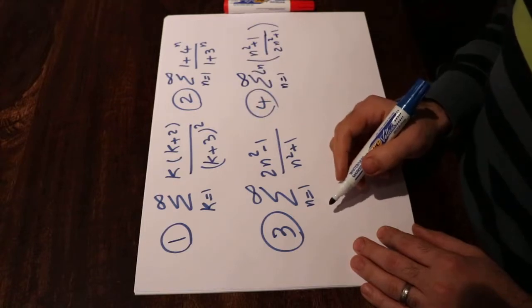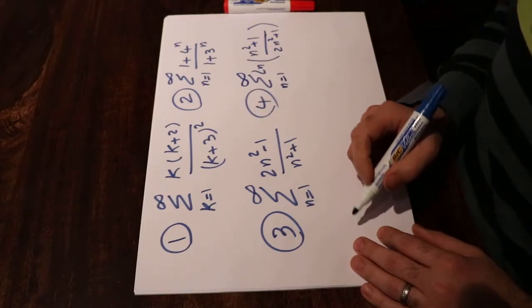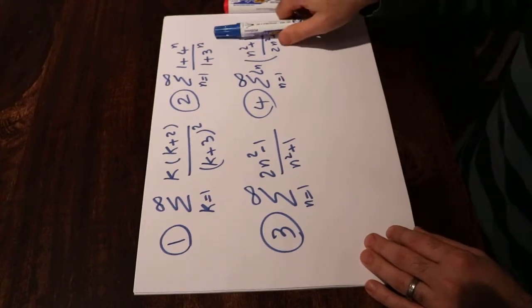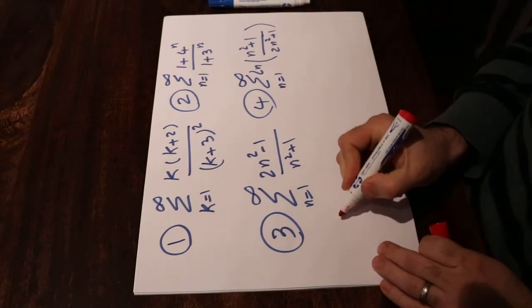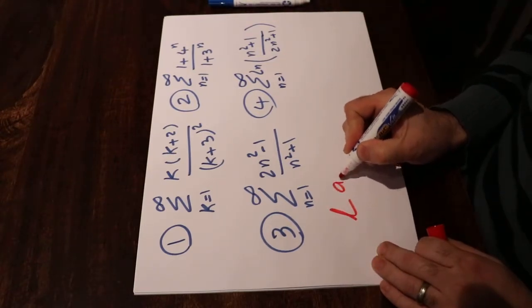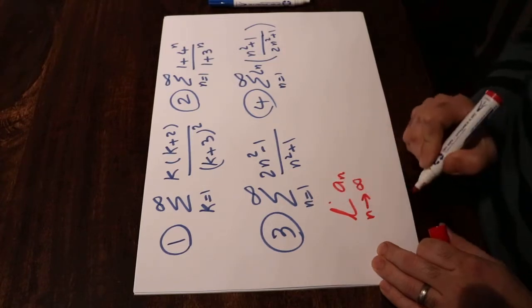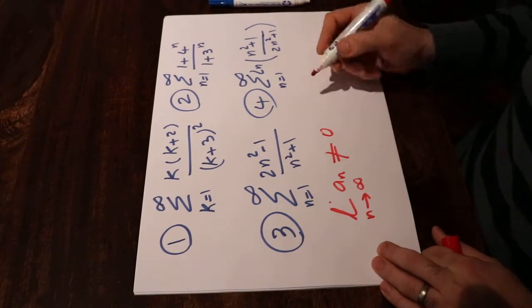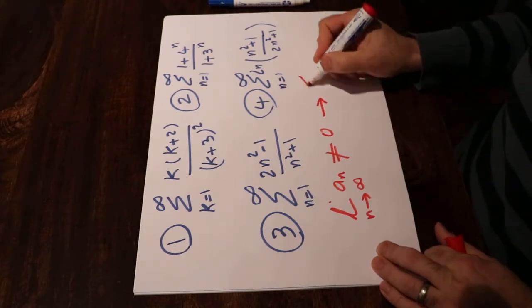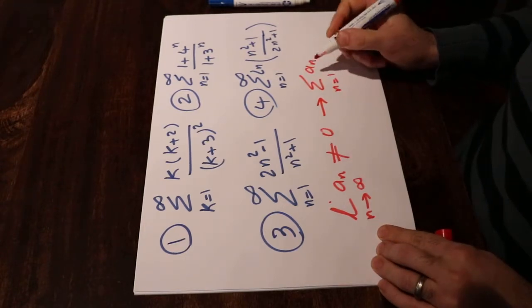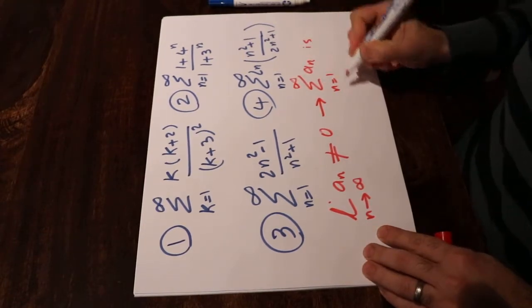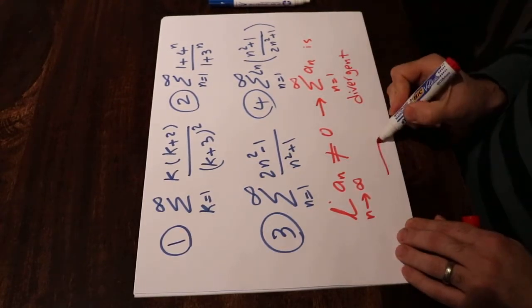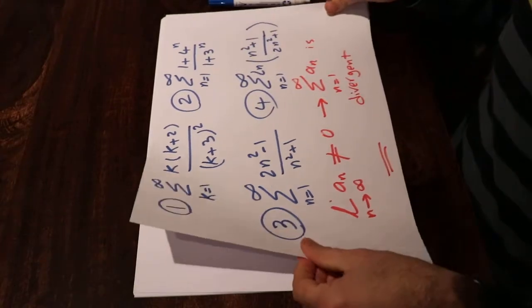The reason I chose these four series is that you can evaluate all of them using the same test. That test basically states that if the limit of aₙ when n goes to infinity is not equal to 0, or if it does not exist, then you can conclude that the series from n=1 to infinity is divergent. Using this test you can evaluate all these series.